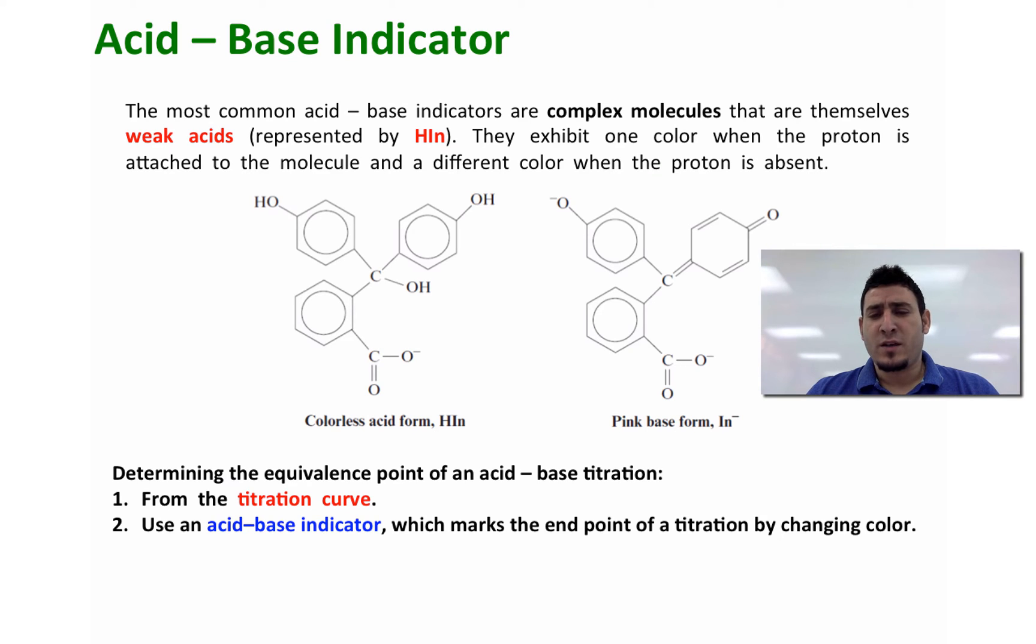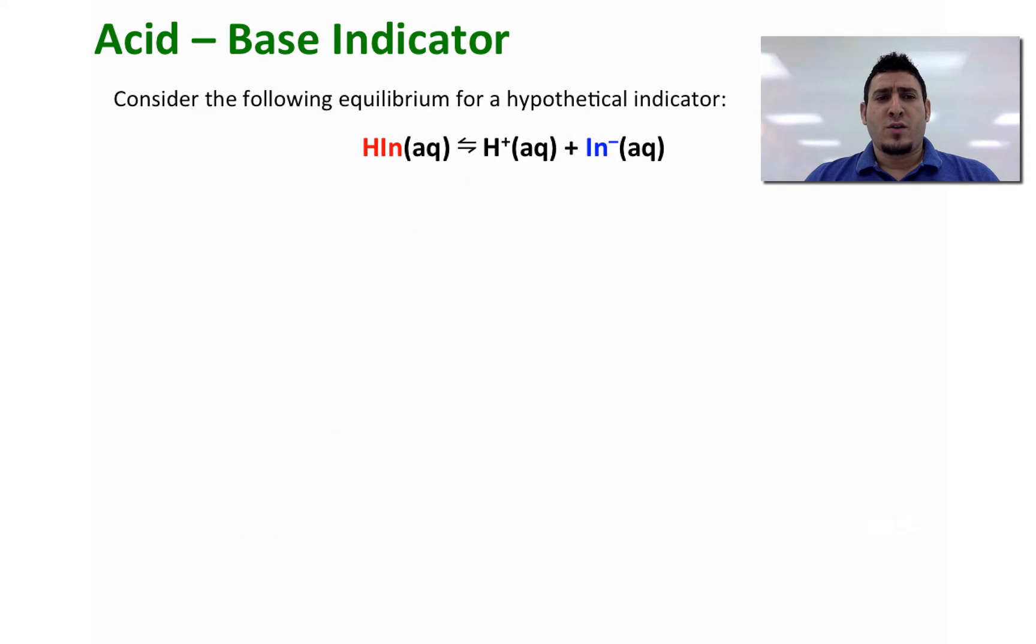or if we are doing a titration in the lab, it's easier to use an acid-base indicator which will mark the end point of the titration by changing its color or the color of the solution. So consider the following equilibrium for a hypothetical indicator.